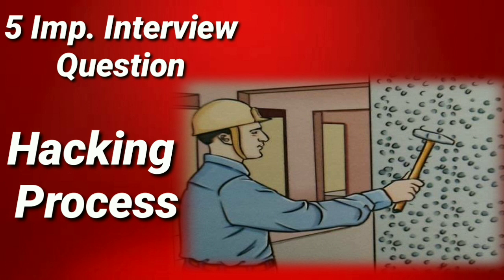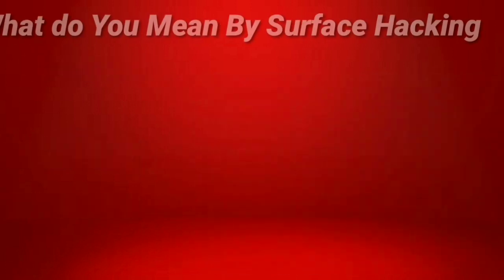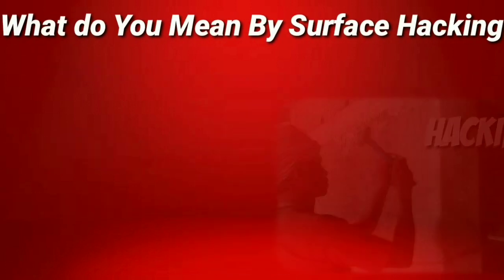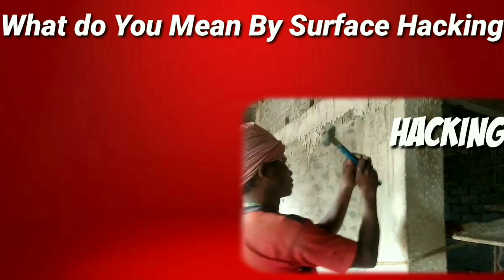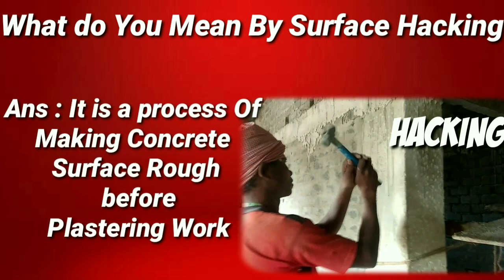The very first question they will ask is about the definition of the hacking process — simply, what do you mean by hacking process in the term of civil engineering? The answer is: hacking is a process of making a concrete surface rough or putting impressions on a concrete surface. It may be on a column, beam, or slab where we have to do plaster.